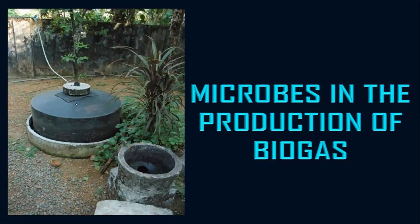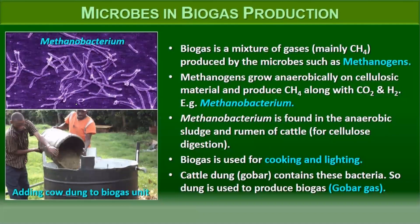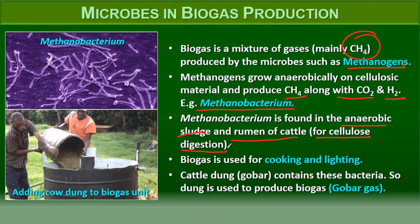Now, the role of microbes in biogas production. Biogas is a mixture of gases, mainly methane, produced by microbes called methanogens. Methanogens grow anaerobically on cellulosic material and produce methane along with carbon dioxide and hydrogen. An example is Methanobacterium, found in anaerobic sludge and in the rumen of cattle, where it aids in cellulose digestion in herbivorous animals. Biogas is used for cooking and lighting.